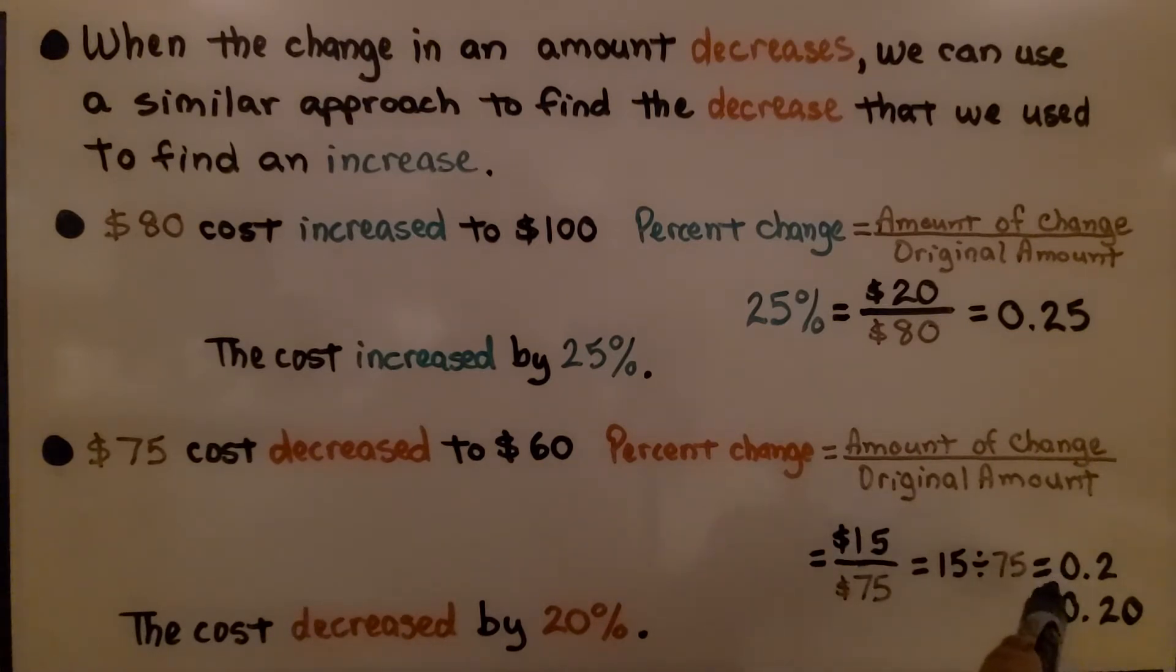That's equal to 0.2, or we can write it with hundredths as 0.20 as 20 hundredths. That means the cost decreased by 20%. We write the decimal as a percentage.